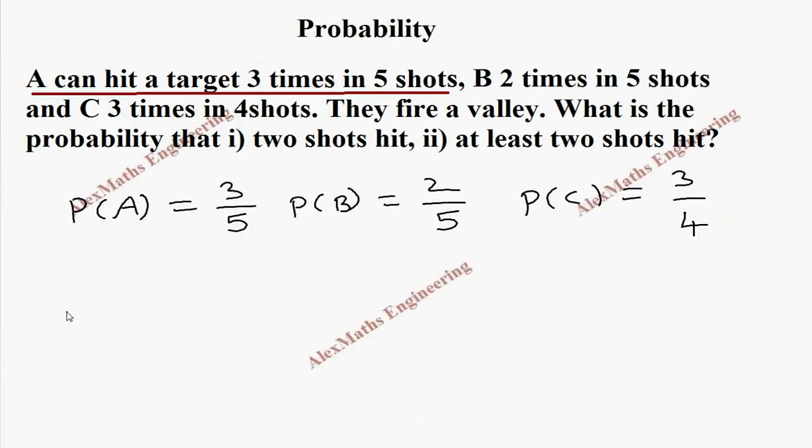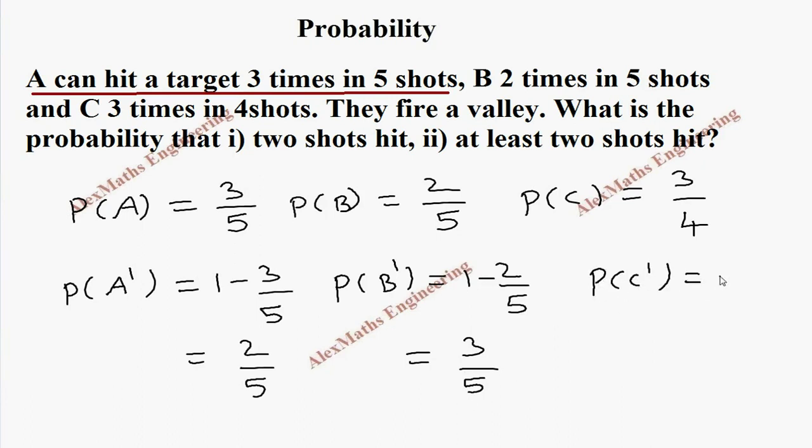You can also find their complement. P of A dash is 1 minus 3 by 5. After simplification, it is 2 by 5. And P of B dash is 1 minus 2 by 5, which is 3 by 5. And P of C dash is 1 minus 3 by 4, which is 1 by 4. Now coming to the first subdivision,